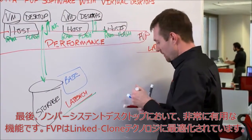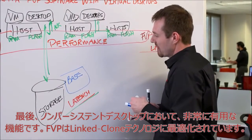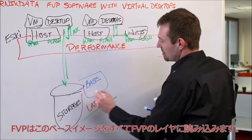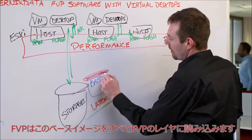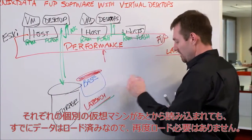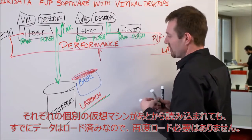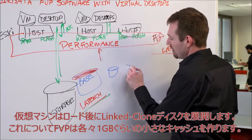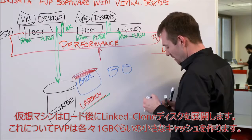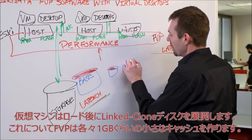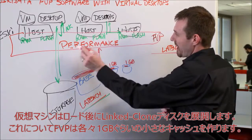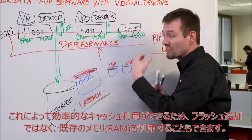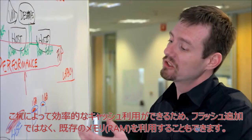One final thing I want to cover is what we can do in the case of non-persistent desktops. We can optimize FVP for link clone technology — as the base image is loaded in, we load all of that data into the FVP layer. As each additional virtual machine is provisioned, we don't have to reload the base image; it's already there. We're only adding a small amount — maybe a gigabyte per desktop — to this layer, which allows for efficient use, particularly important when using existing RAM rather than flash.